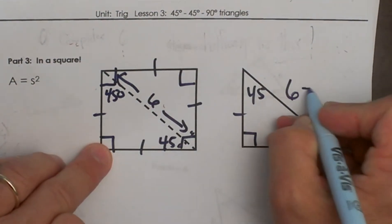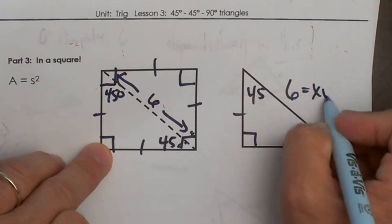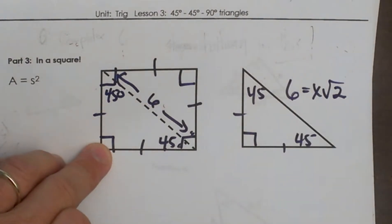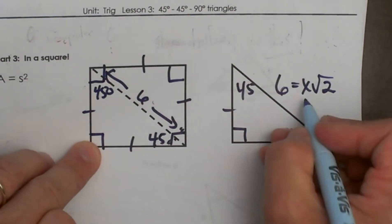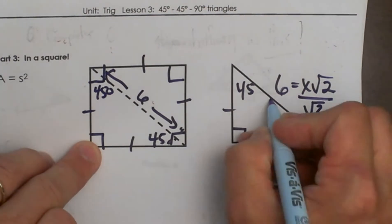So we know that this is x square root 2. So we can set the hypotenuse equal to x square root 2 and then just divide both sides by the square root of 2.